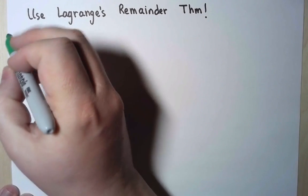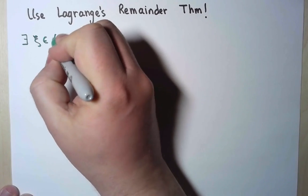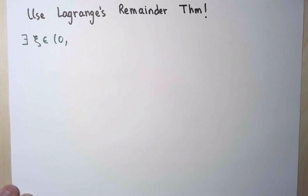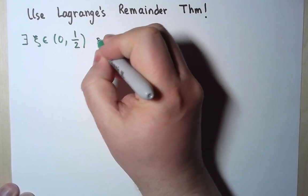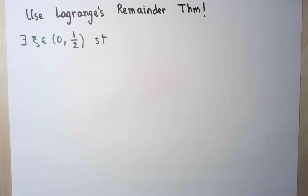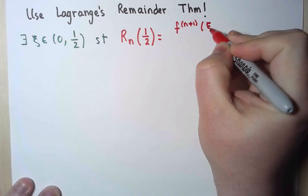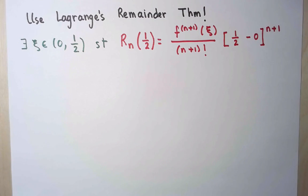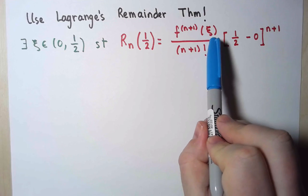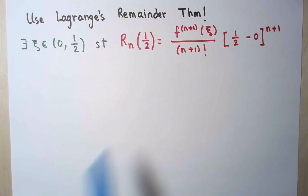But what it says in this case is that there exists some number between 0, which is where I center my power series, and 1/2, which is where I evaluate it, such that the remainder has an explicit form. That is the n plus first derivative at that point xi over n plus 1 factorial, and the n plus 1 power of 1/2 minus 0.